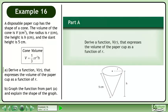A disposable paper cup has the shape of a cone. The volume of the cone is V in cubic centimeters, the radius is r in centimeters, the height is h in centimeters, and the slant height is 5 centimeters.